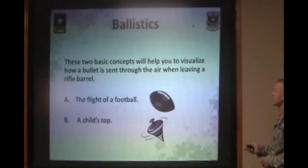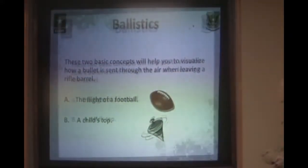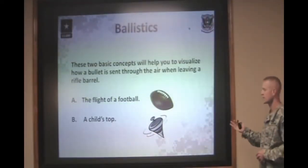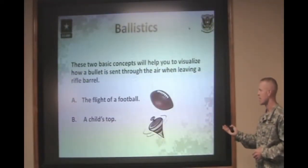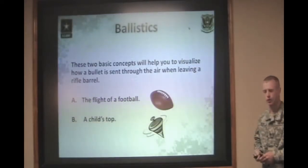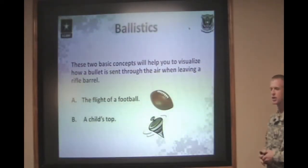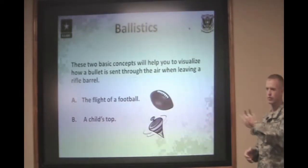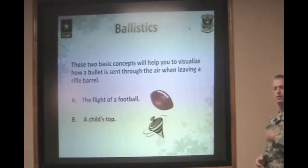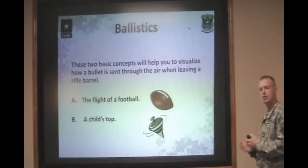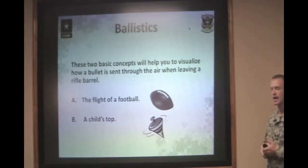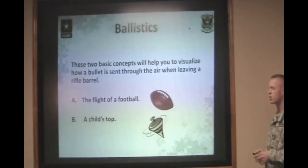We have two basic concepts that help you visualize how a bullet flies through the air when leaving the rifle barrel: the flight of a football and a child's top. If you're going to throw a football on a very short pass, you can pretty much throw it directly to the person you're throwing it to. If you have to throw it farther downrange, you have to increase the angle of departure, lofting the football higher in the air, allowing it to fly farther before it falls.